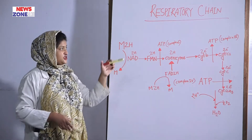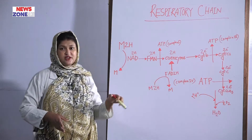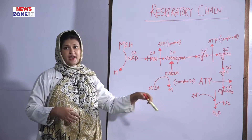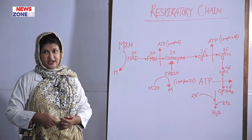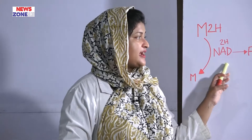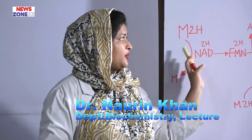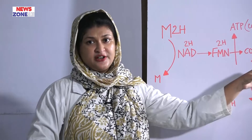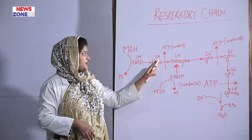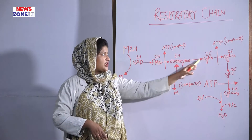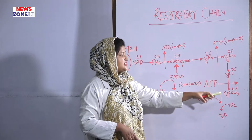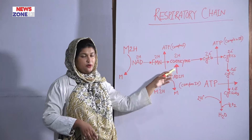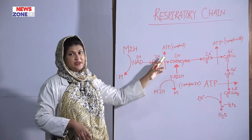In the respiratory chain, the hydrogen carrier and electron carrier components are arranged according to their increasing redox potential, from most negative to most positive. The order is: NAD → FMN → coenzyme Q → cytochrome B → cytochrome C1 → cytochrome C → AA3. FAD directly enters at coenzyme Q, so the earlier steps are bypassed in that case.